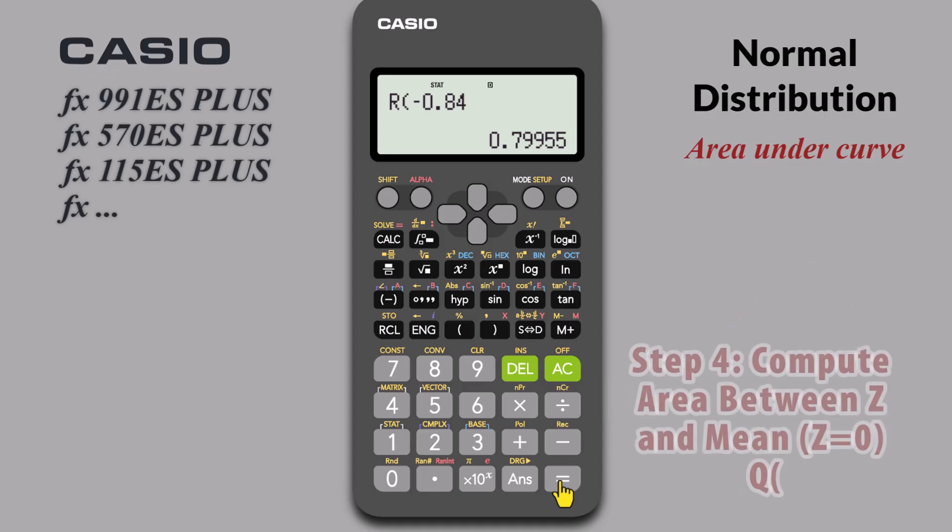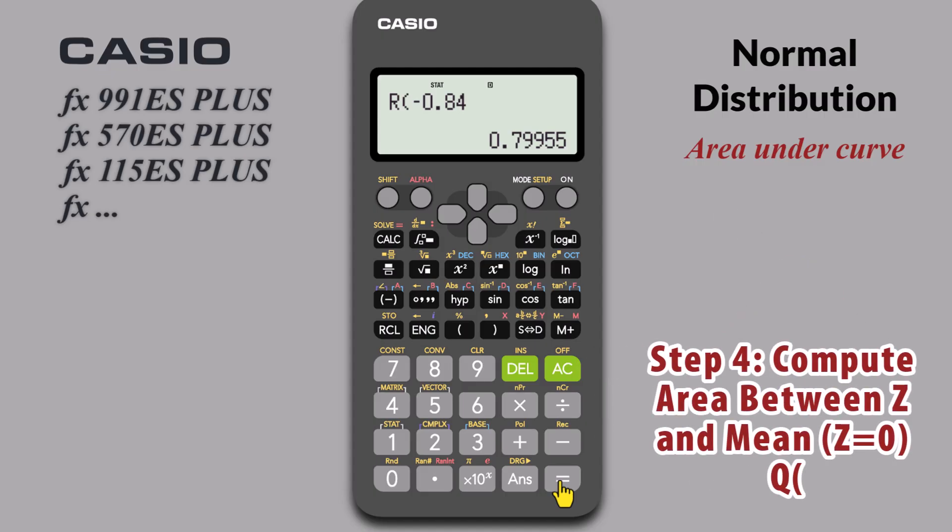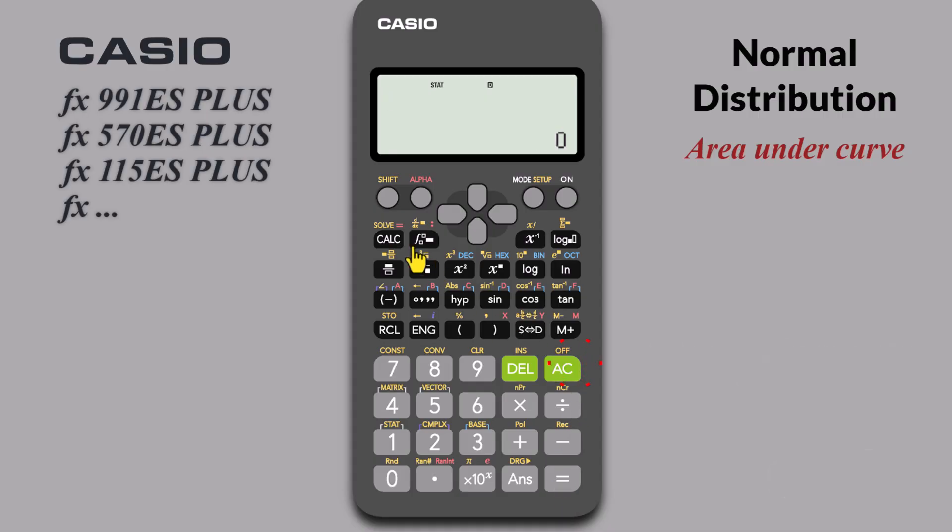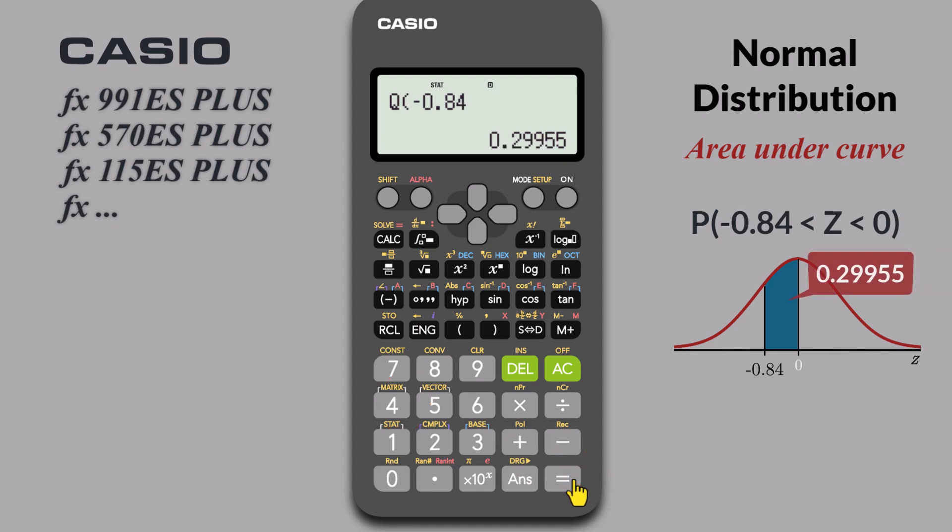Now let's compute the area between the Z-score and the mean Z equals 0. Press AC to clear. Press SHIFT-1 for Start Menu, then 5 for DISTRIBUTION. Select 2 for Q. Enter negative 0.84 equals. And that's 0.29955, which is the area between the mean Z equals 0 and Z equals negative 0.84.